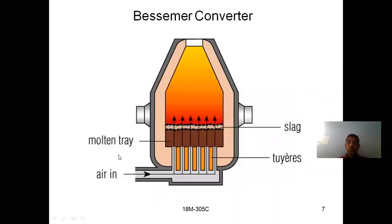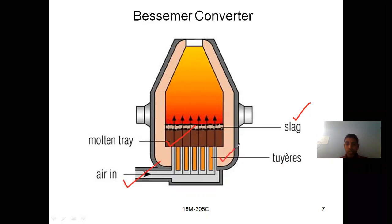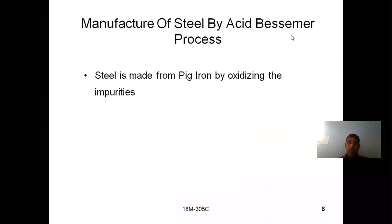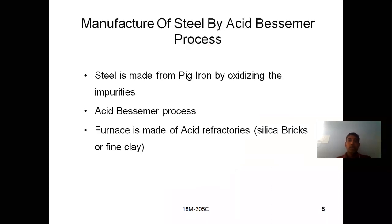In the diagram you can see the slag, the molten metal bath, and the tuyeres used for supplying the air blast. There are two types of Bessemer converters — the acid Bessemer process and the basic Bessemer process. We will now discuss the difference between these two and how each process works.